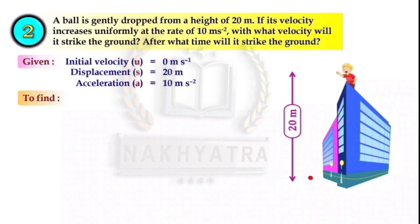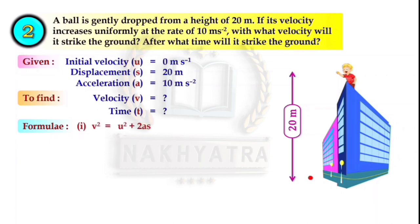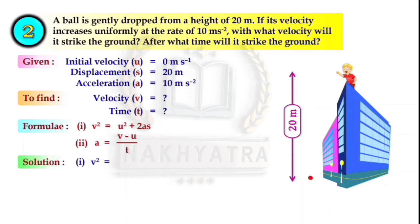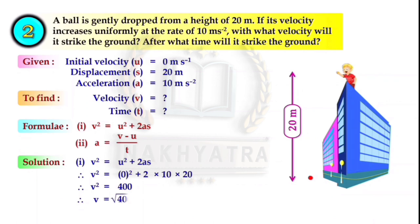We have to find out the velocity and the time. For finding the velocity we use the third kinematical equation: v² = u² + 2aS. Putting the values: v² = 0² + 2 × 10 × 20 = 400. So v = √400, therefore v = 20 meter per second.